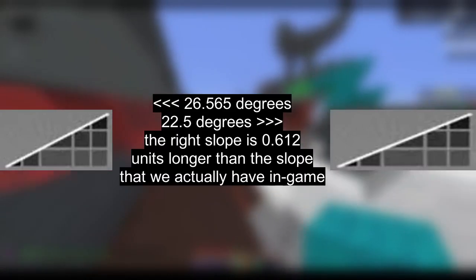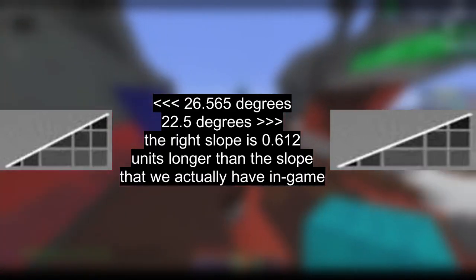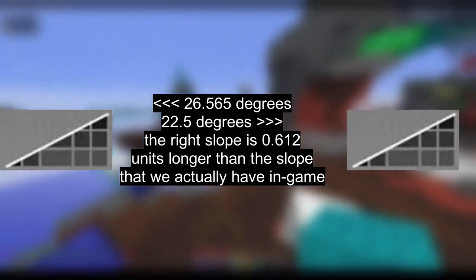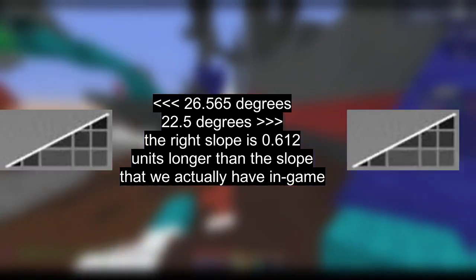Comparing it to the 26.565-degree slope, which is the correct way to refer to the 2-unit wide slope that we have in game, a 22.5-degree slope is theoretically more than half a unit longer. That's it.